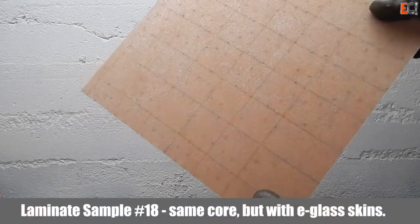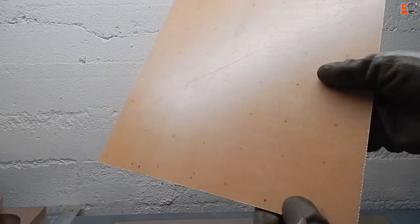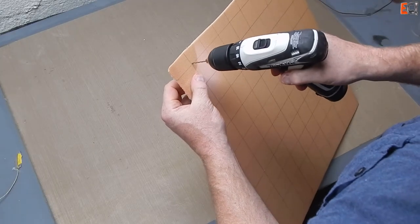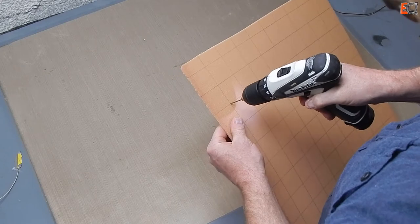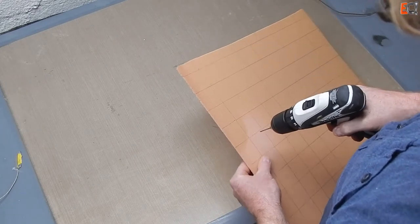Here's a look at laminate sample 18 which uses the same core but with e-glass skins. In this one you can see there are holes punched in the core every 50mm or so. This is really important because this lets air from the bottom skin come out because this is closed seal foam and air doesn't go through.